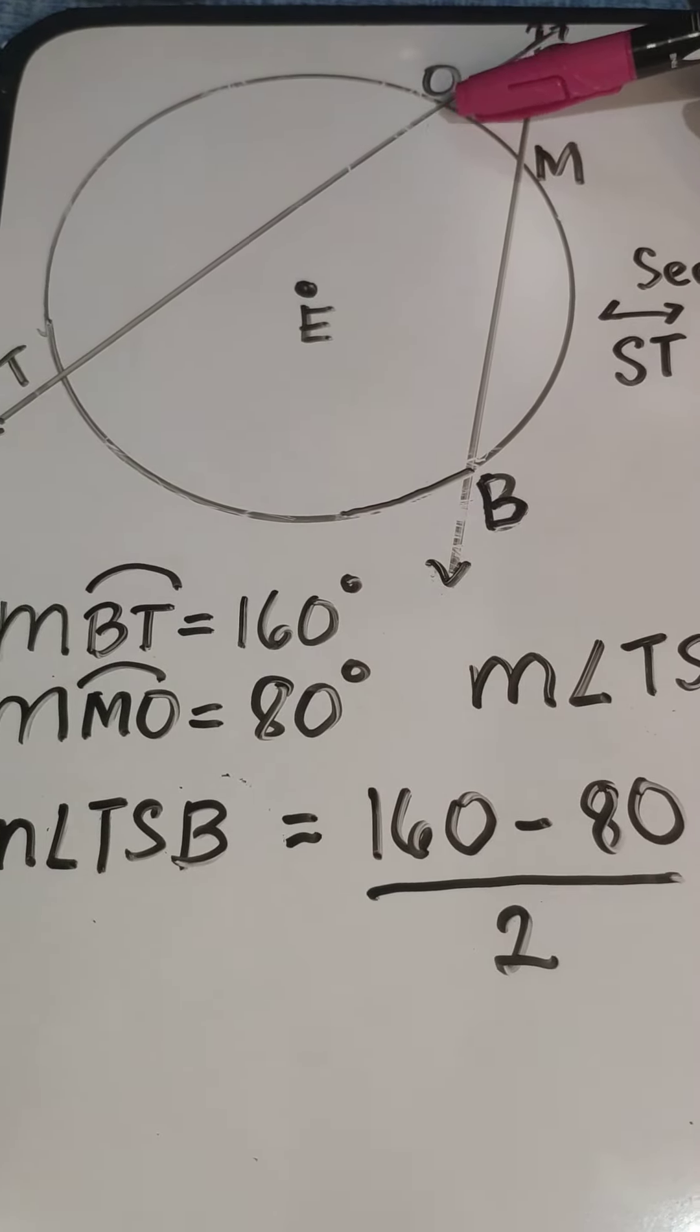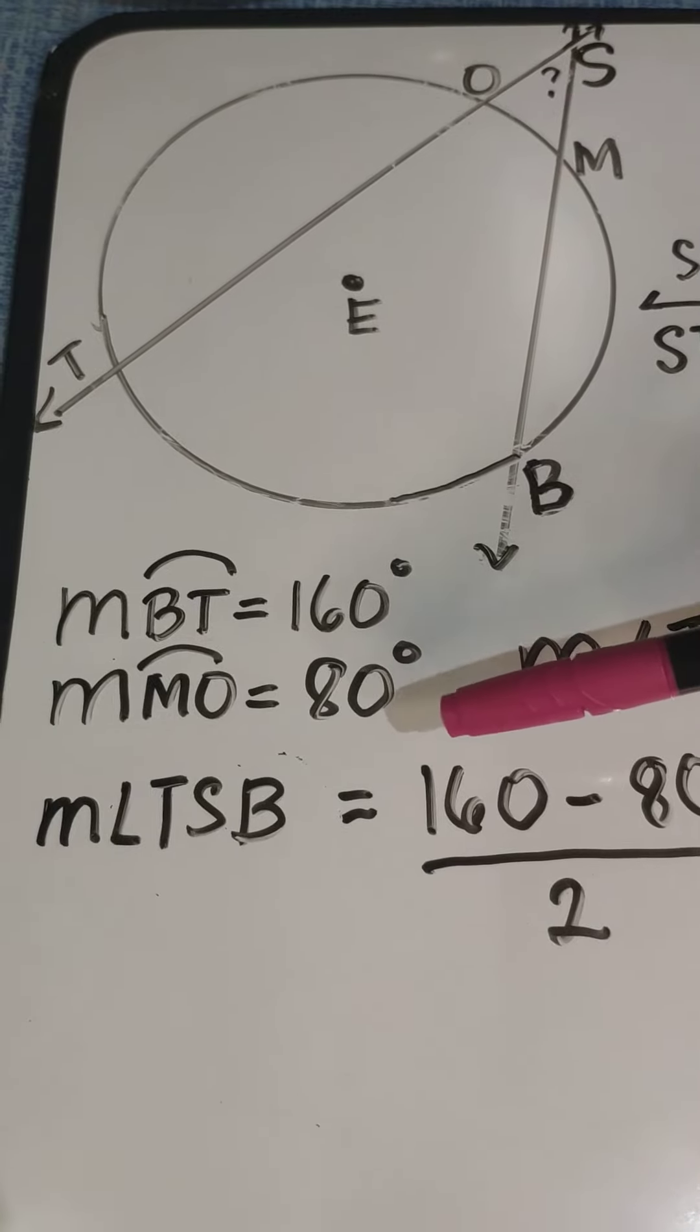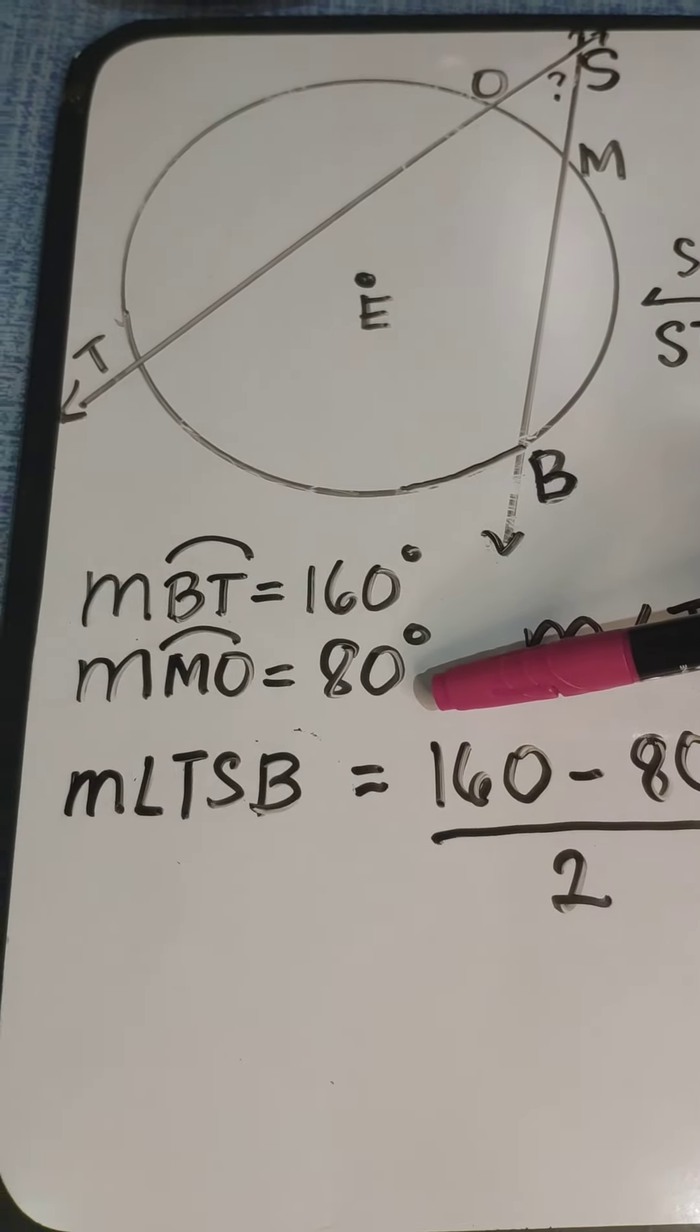Another intercepted arc is arc OM or arc MO. The measure of arc MO is 80 degrees.